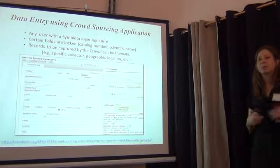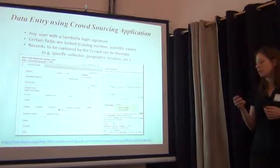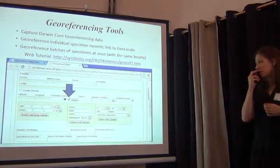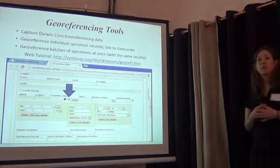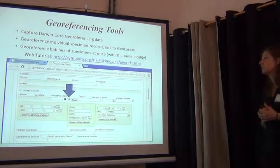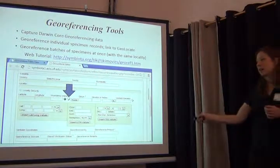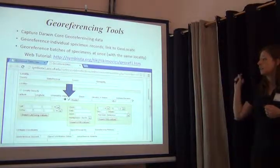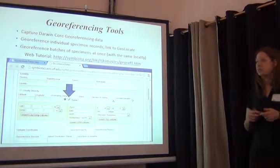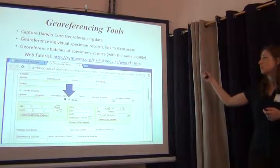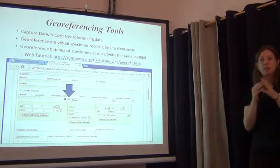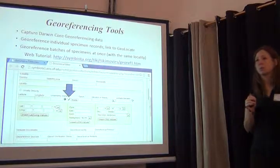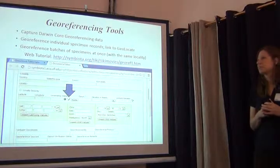Recruiting the crowd — people who you would never expect to be interested in capturing data — really are. Another nice feature that Symbiota incorporates are web-based georeferencing tools. In addition to supplying all of the Darwin Core georeferencing fields, it allows you to georeference one specimen at a time by linking to the web instance of GEOLocate, so you can determine the geocoordinates for the specimen you're looking at. John will go into great detail about georeferencing soon.